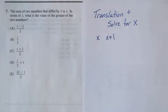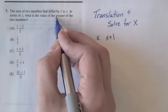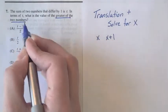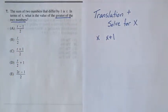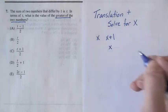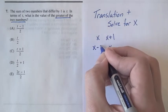But in order to solve this problem a little more efficiently, it's good to notice that the value you're interested in is the greater of the two numbers. So it would really be a better choice to make the bigger number x and the smaller number x minus one.